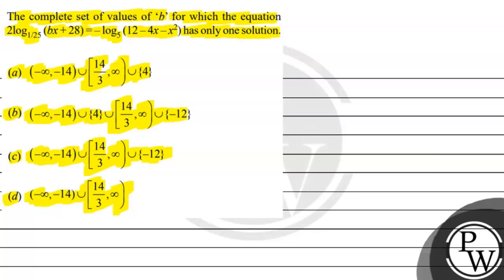So let's find the complete set of values of B for which the equation — 2 times log base (1/25) of (Bx + 28) equals minus log base 5 of (12 minus 4x minus x²) — has only one solution.